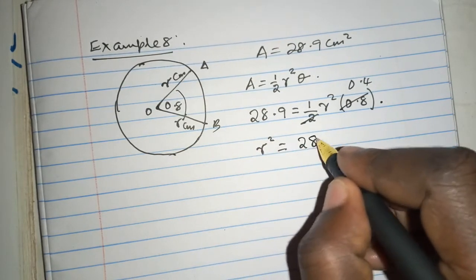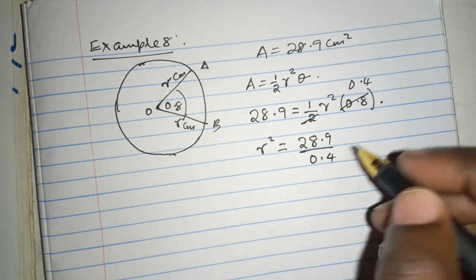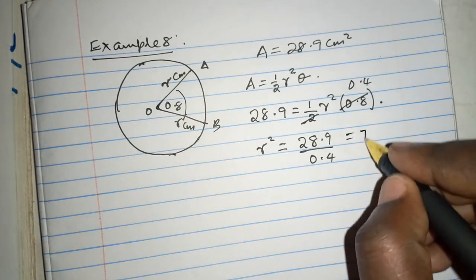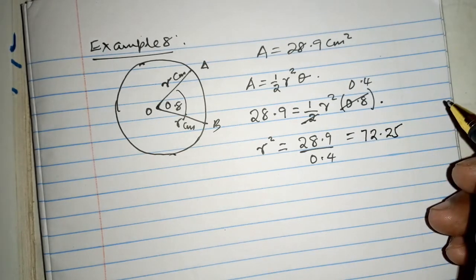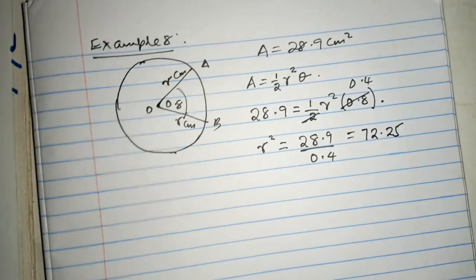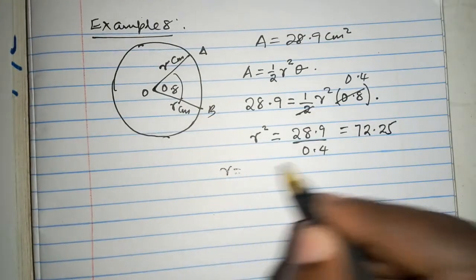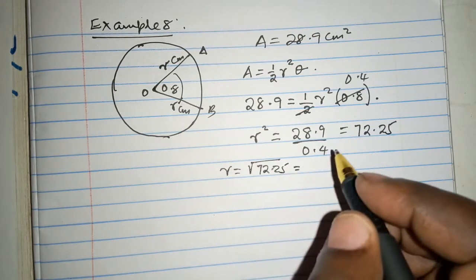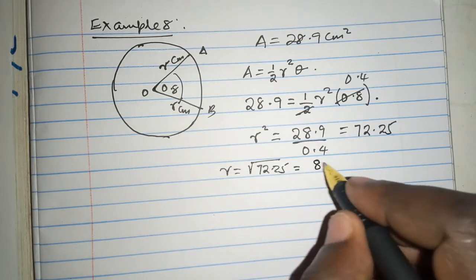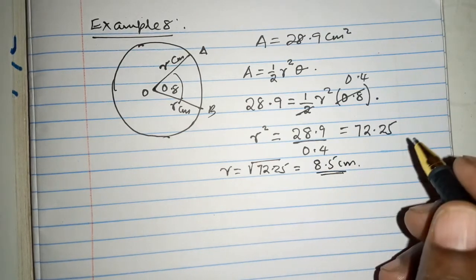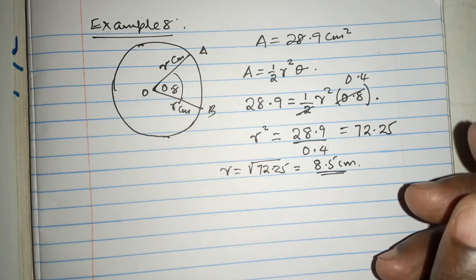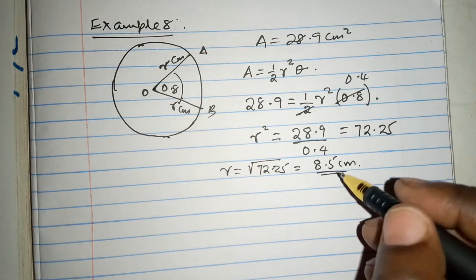And you're going to have to make R squared, the subject of the formula, to be 28.9 over 0.4, which is basically 72.25. And 72.25, that is R squared. So the value of the radius is obviously now the root of 72.25, which is easily around 8.5 centimeters. Please note we've just been able to use the formula and we have captured what we wanted as the value of R.